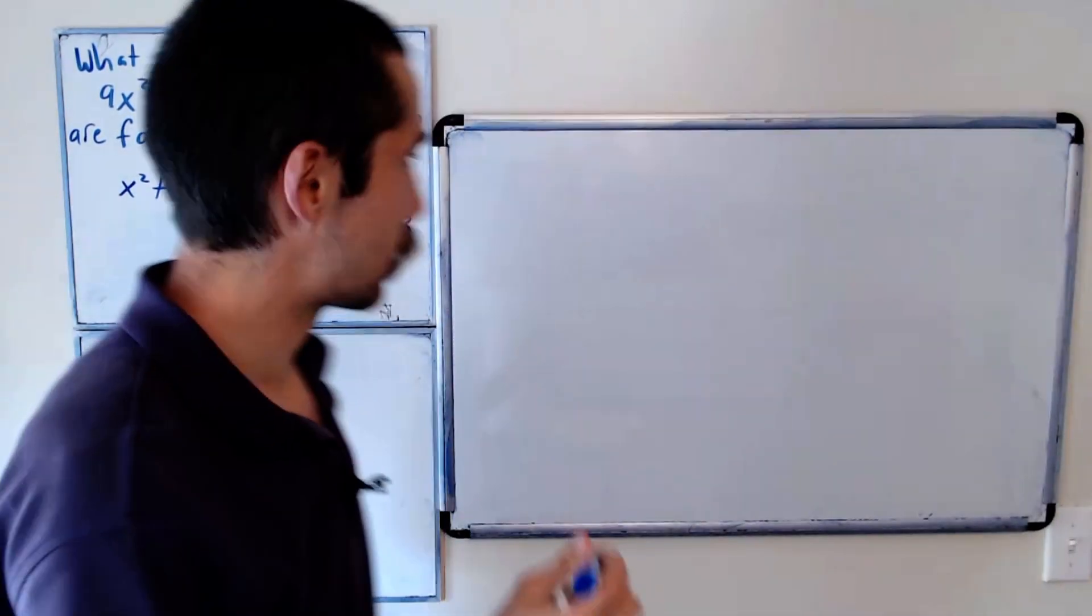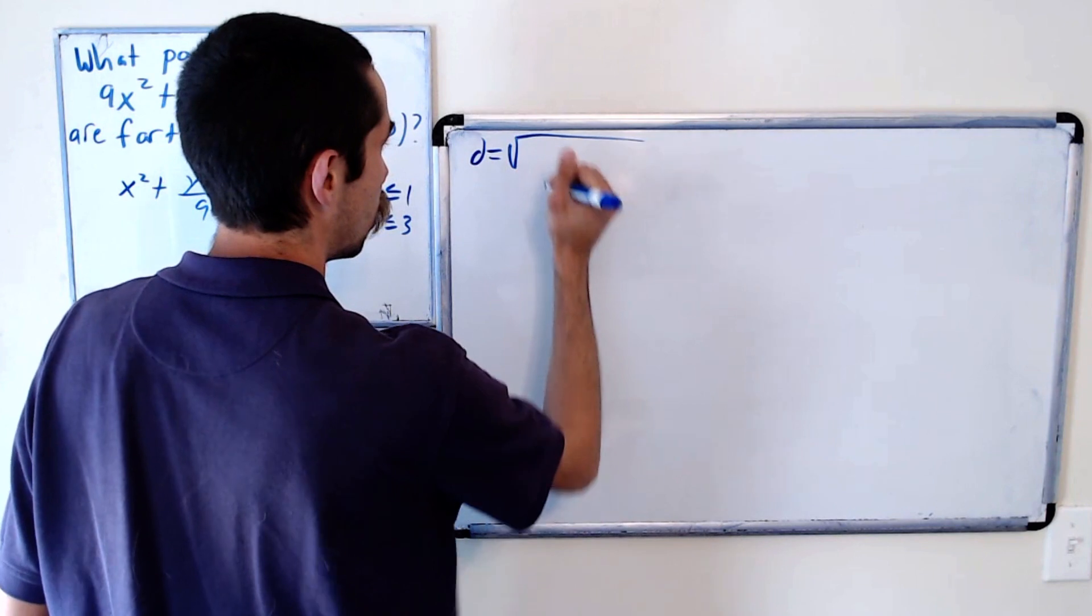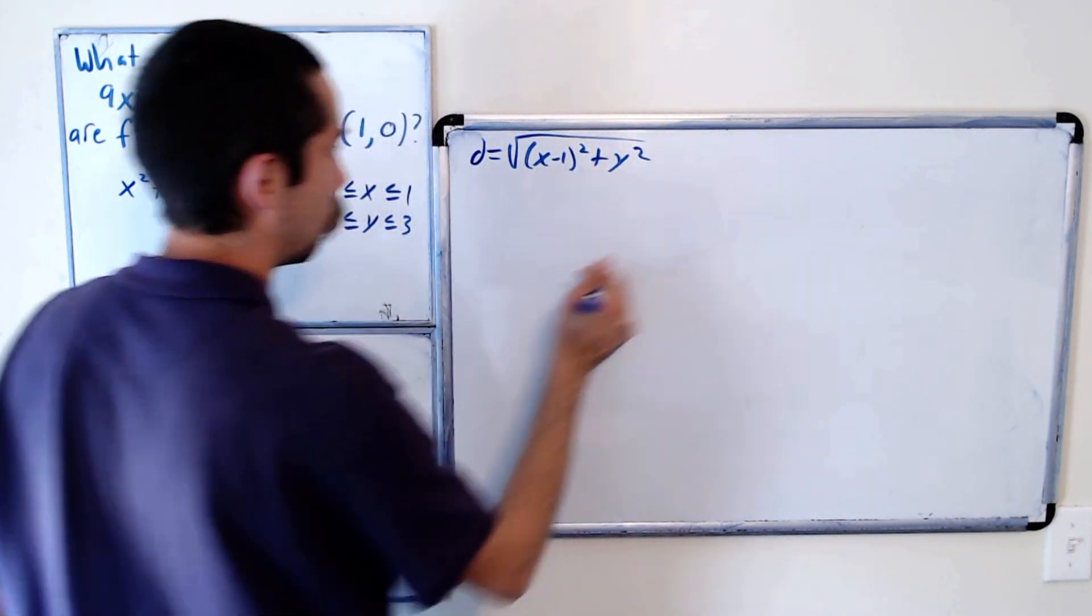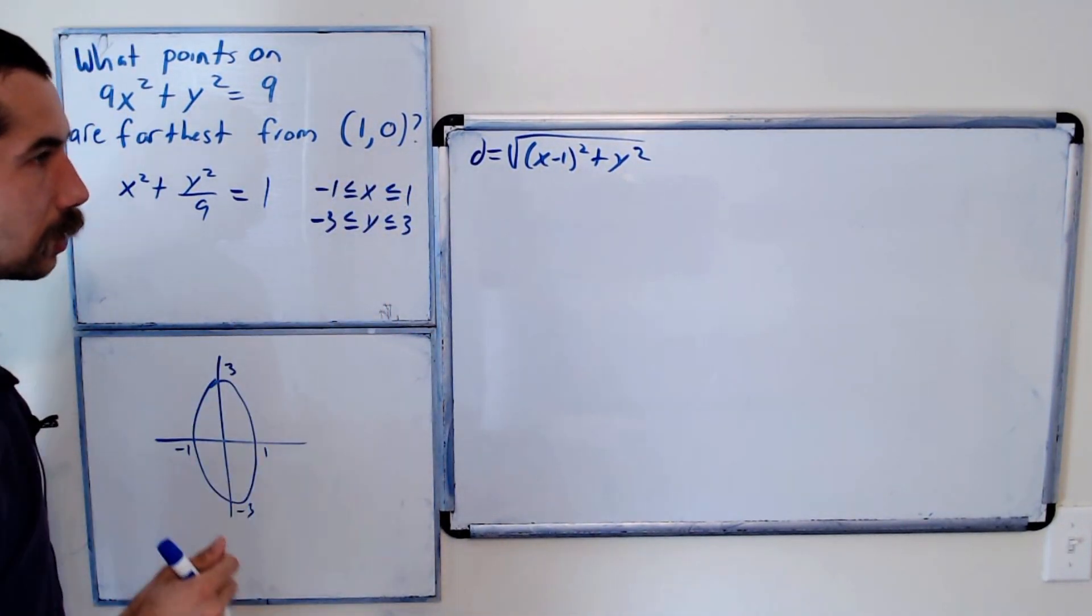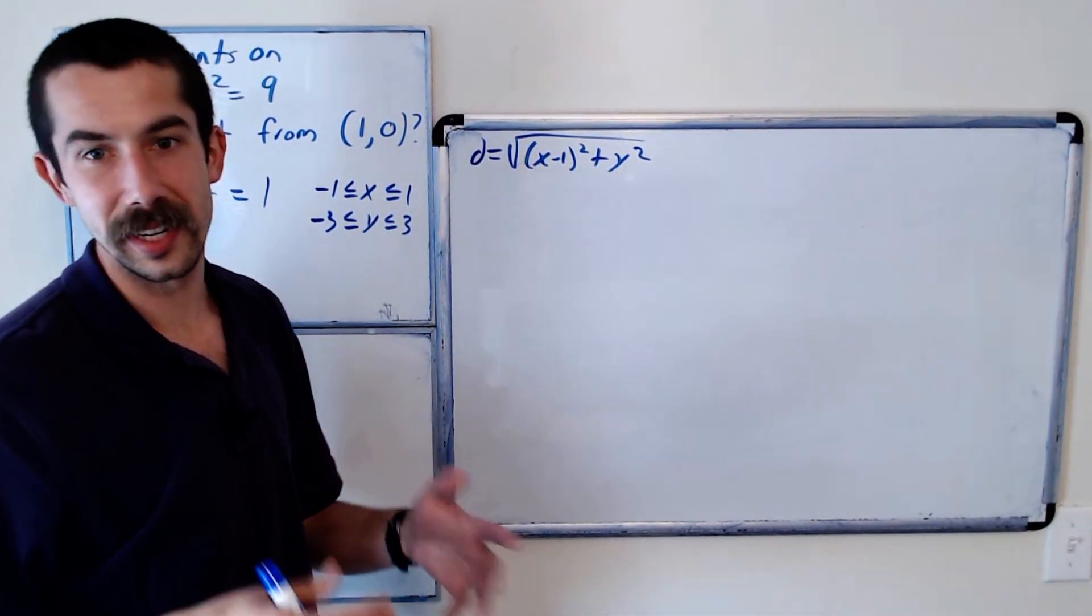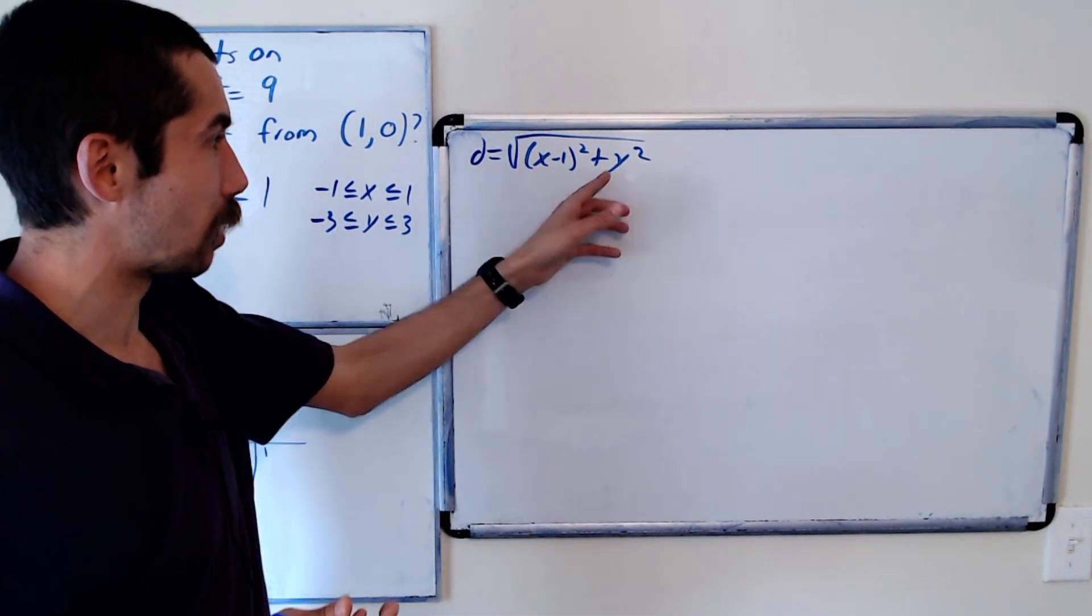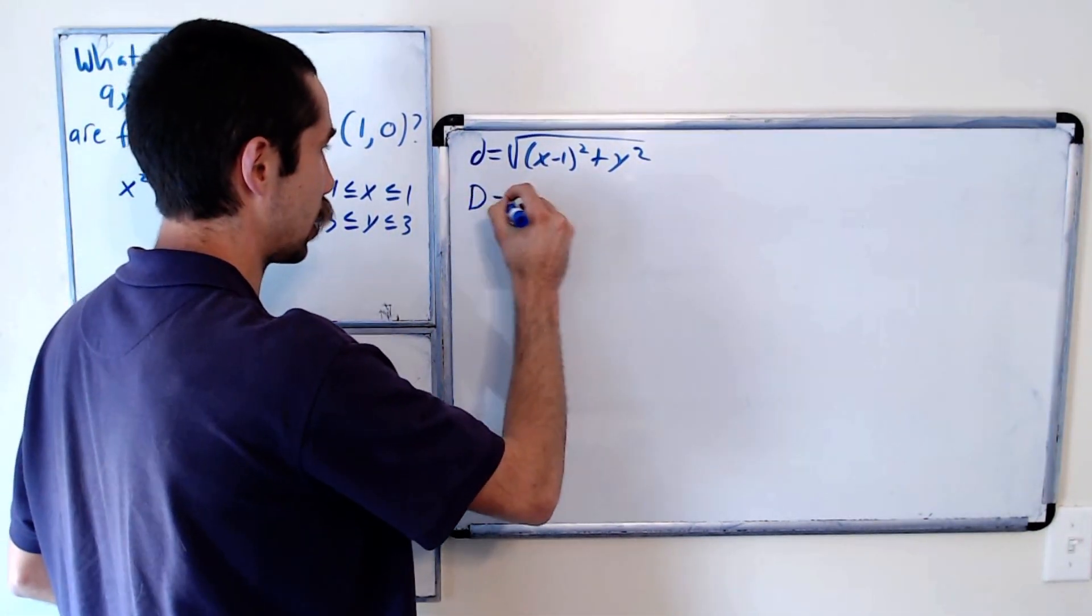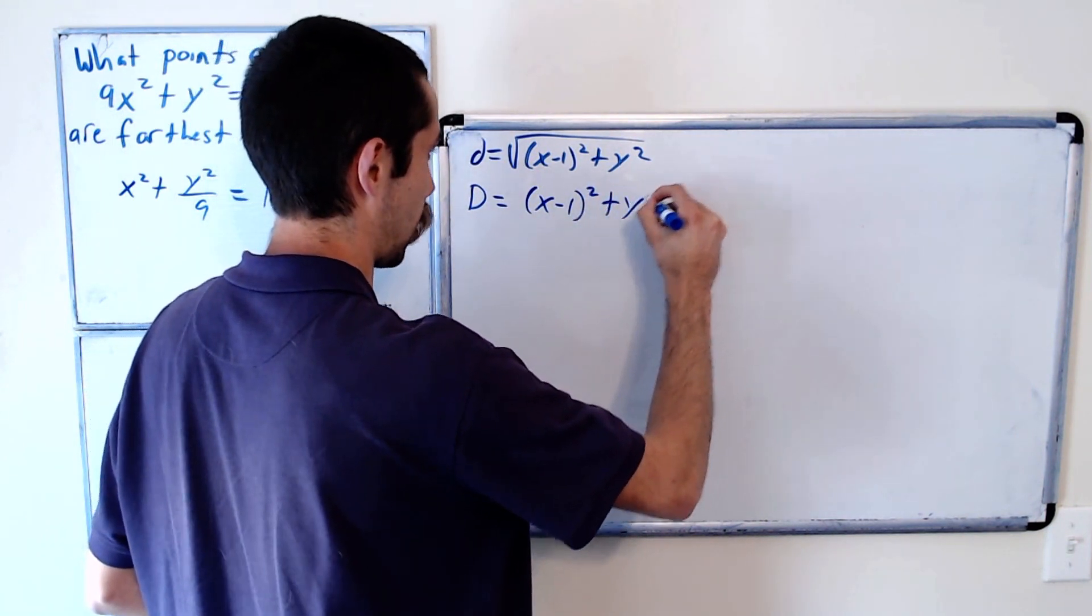We want to maximize the distance function d equals the square root of (x minus 1) squared plus y squared. But the square root function is an increasing function, so to maximize the square root of something, you could just maximize the inside of it. So let's call that capital D equals (x minus 1) squared plus y squared.